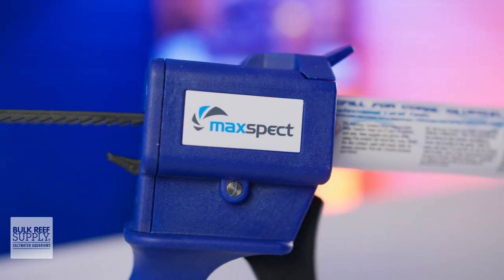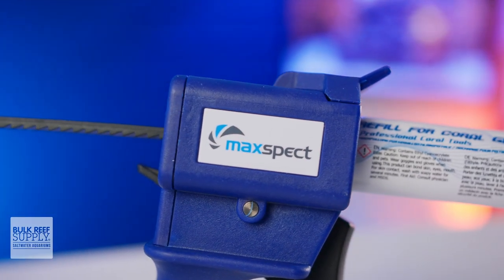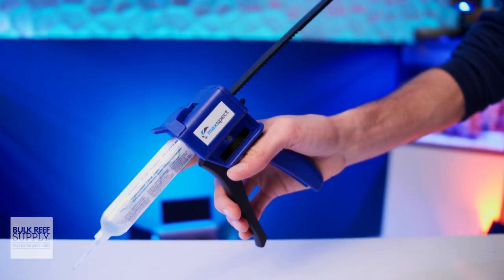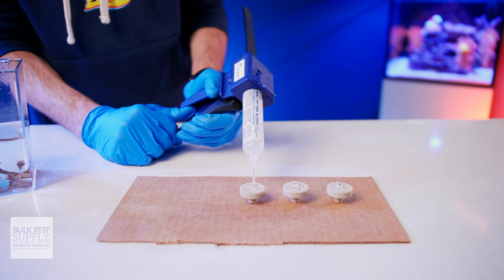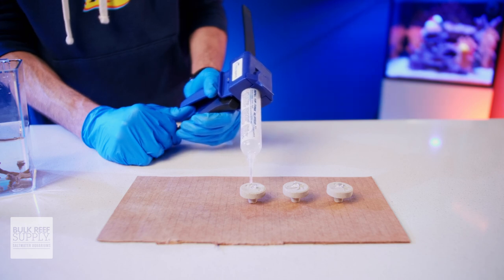It works very similarly to a standard caulking gun. As you pull on the trigger, it engages a ratchet that pushes the plunger forward, and presses against the inside of the tube of glue, forcing some of the glue to come out of the other end.